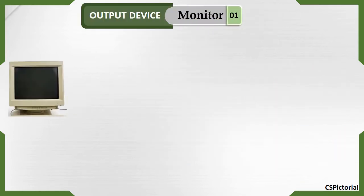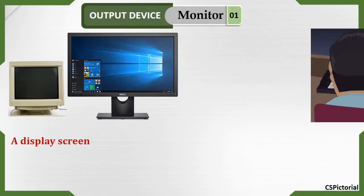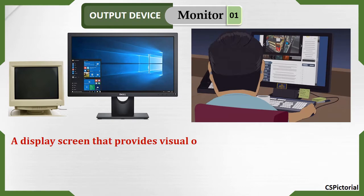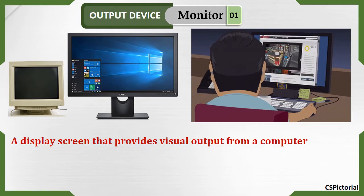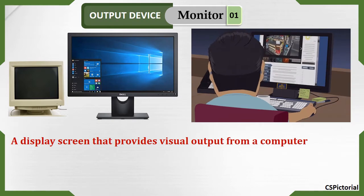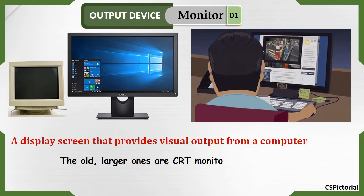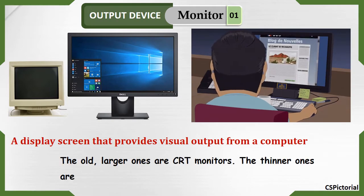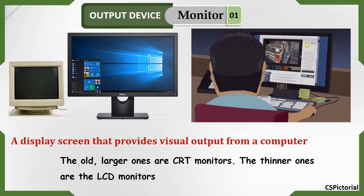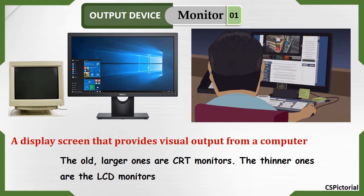The most commonly found output device is the monitor. Monitor is the display screen that displays output from the computer. Computer monitors could be CRT monitors or LCD monitors.